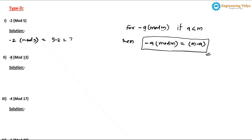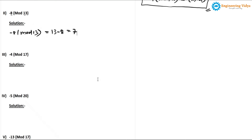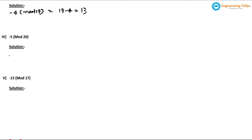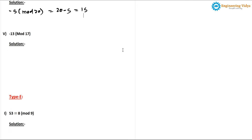In problem 2: (-8) mod 13 = 13 - 8 = 5. Wait — the answer is 5. In problem 3: (-4) mod 17 = 17 - 4 = 13. In problem 4: (-5) mod 20 = 20 - 5 = 15. In problem 5: (-13) mod 17 = 17 - 13 = 4.